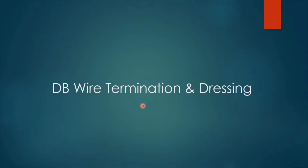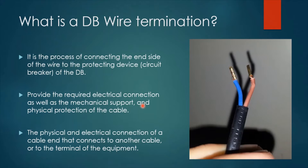Hello everyone and welcome to this video. In this video we are going to continue the DB installation procedures by understanding more about the wire termination and dressing. Let's first begin with the definition of DB wire termination. It could be defined as the process of connecting the inside of the wire to the protecting device, which is the circuit breaker or circuit breakers of the distribution board.